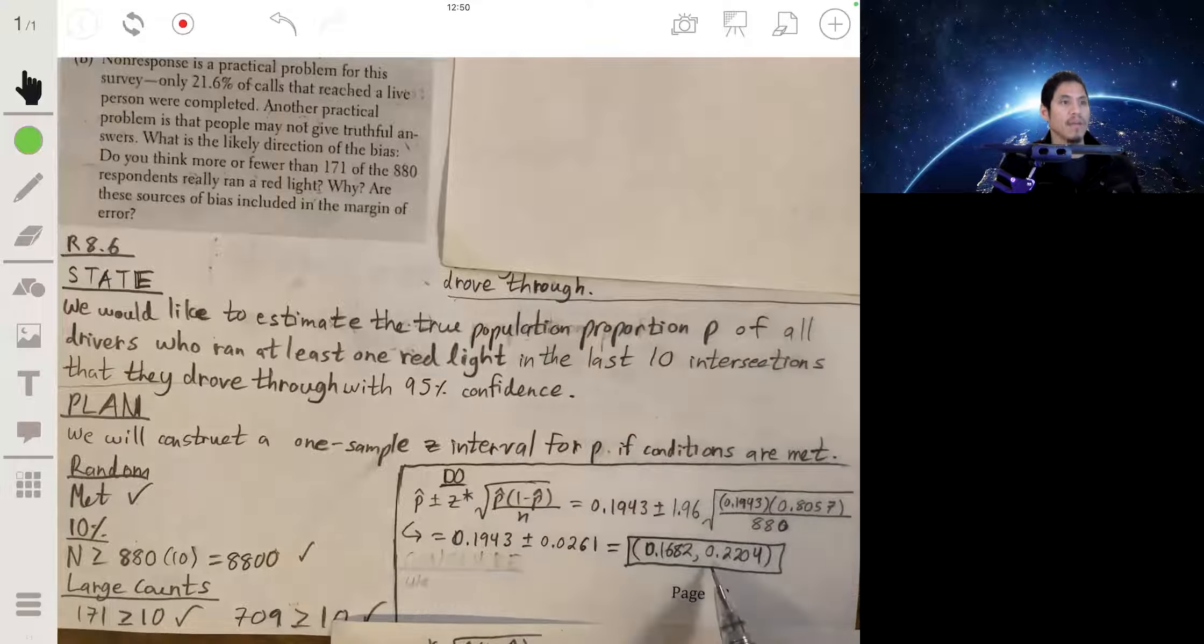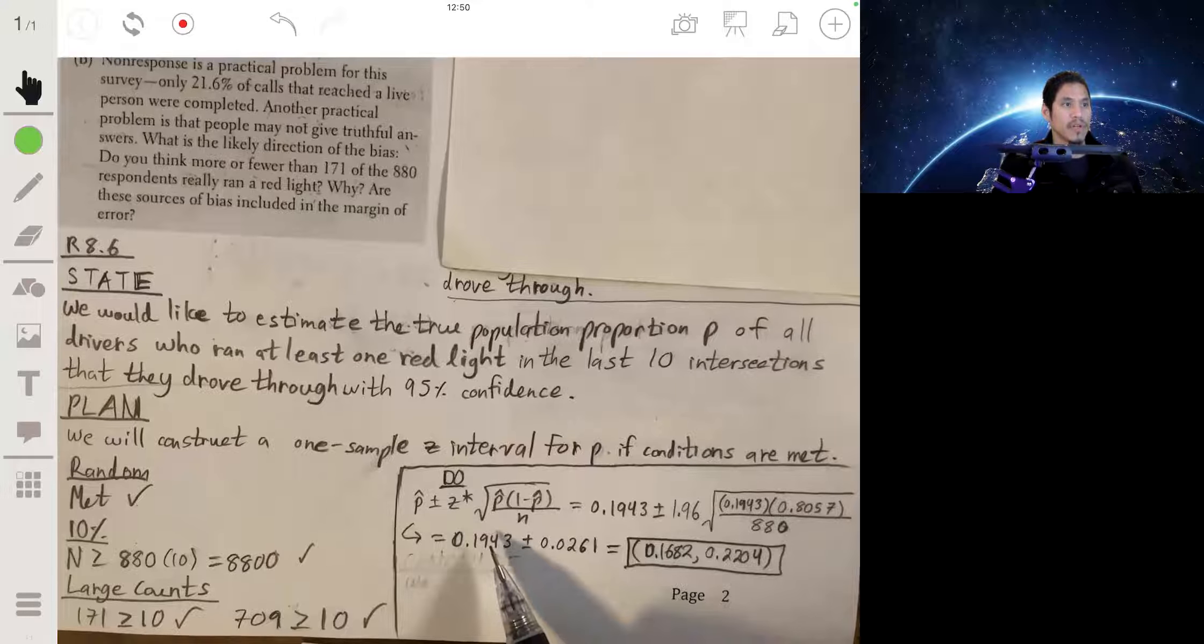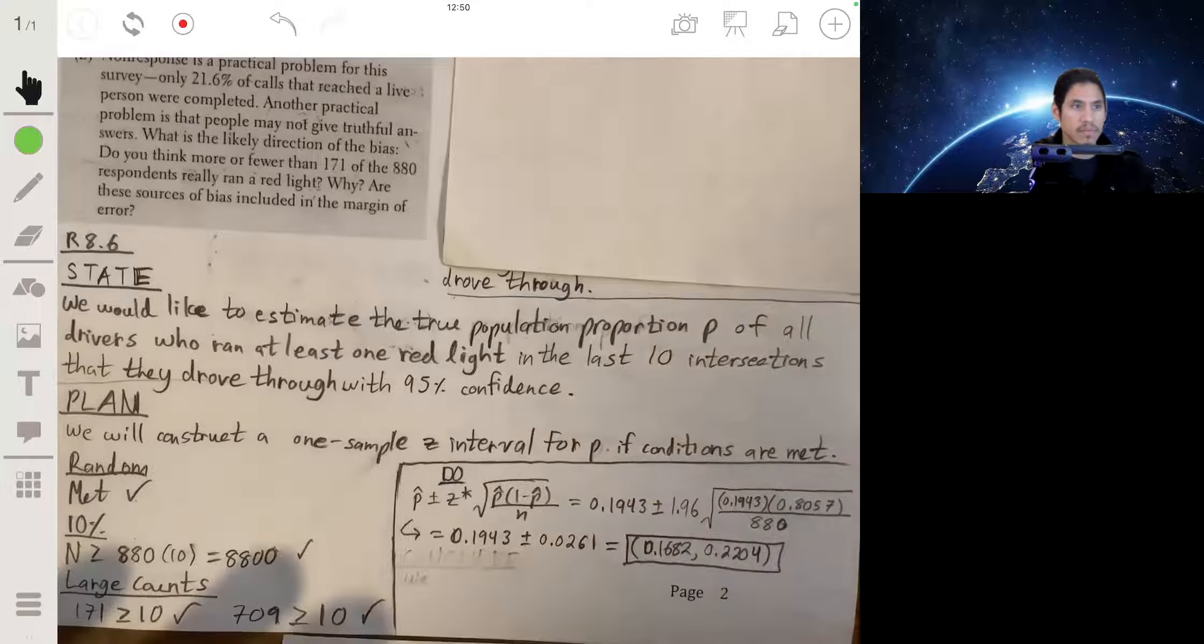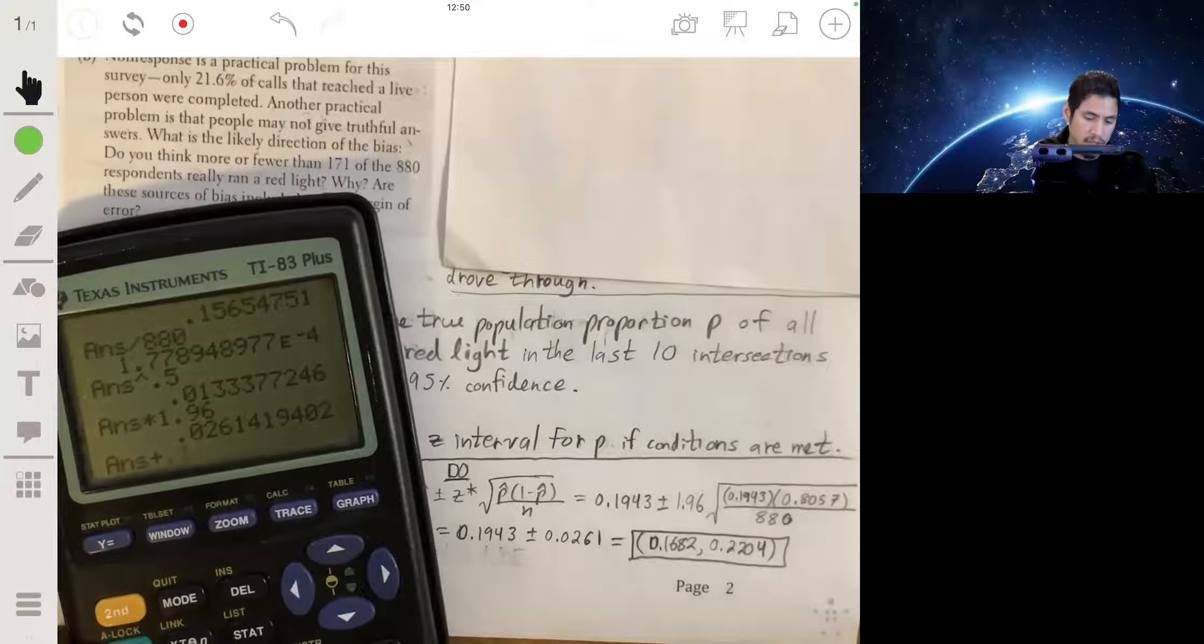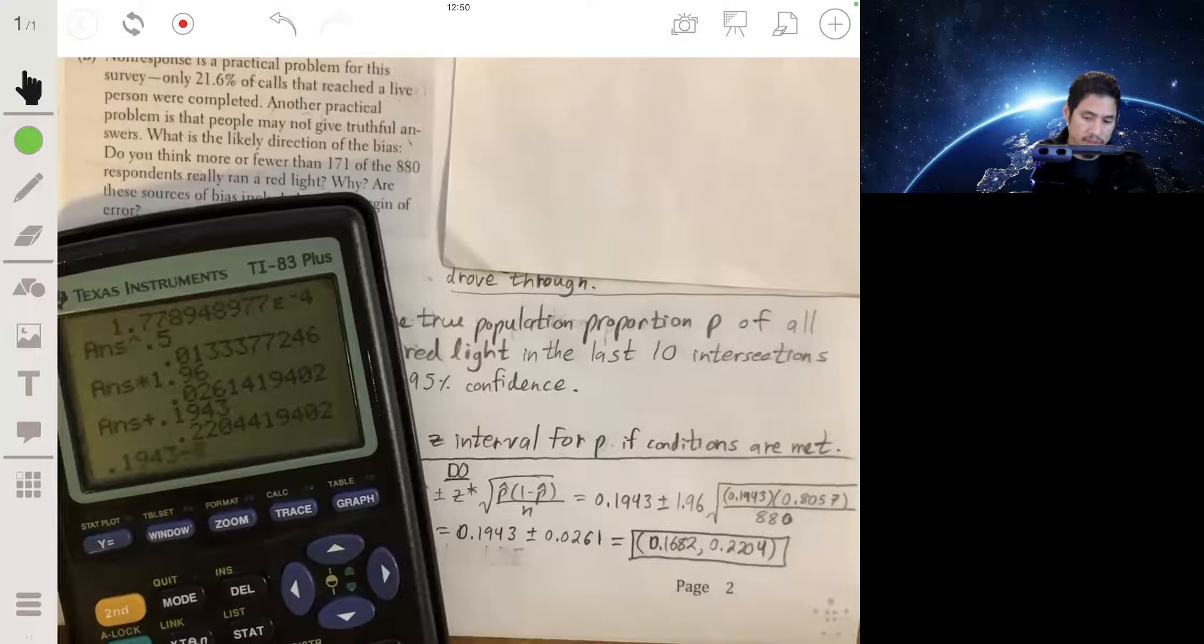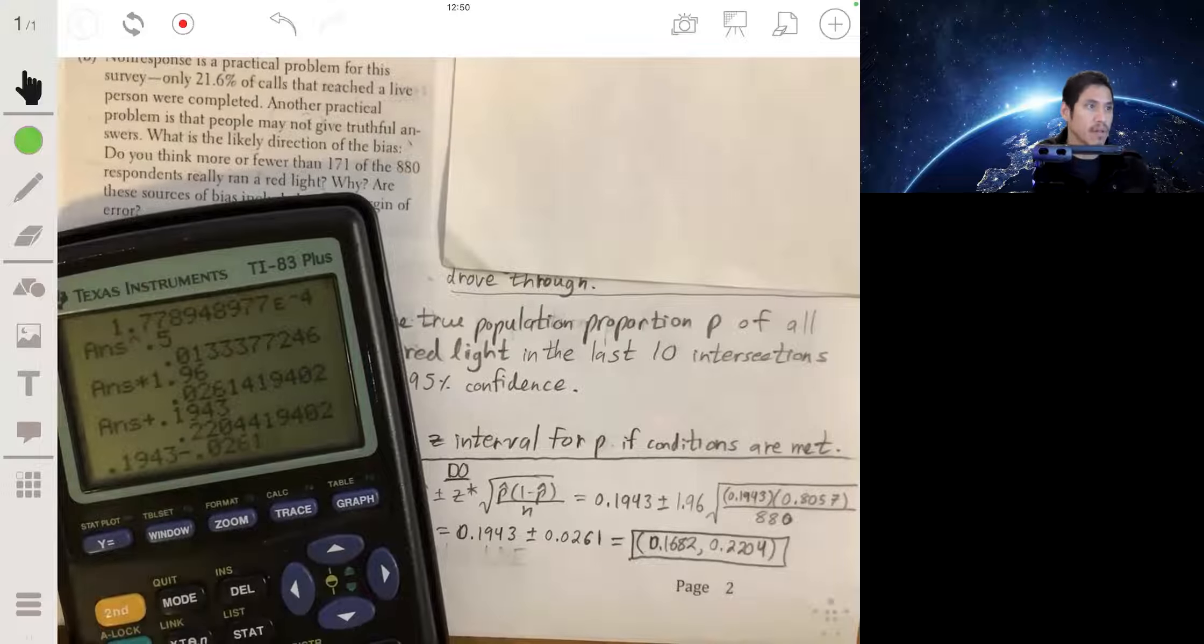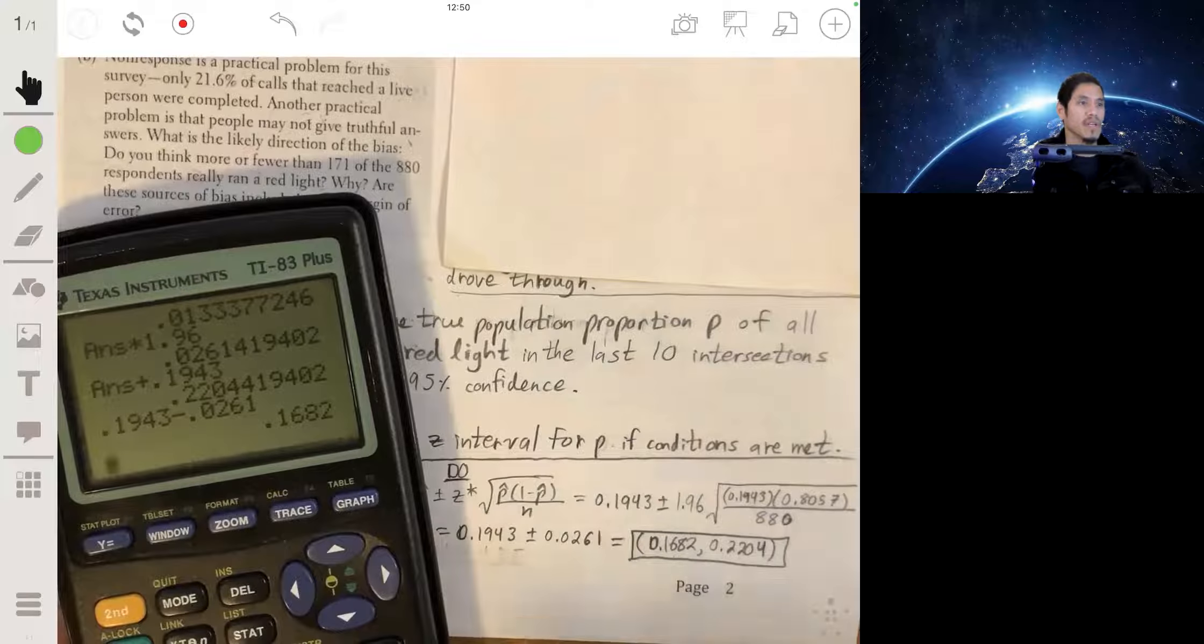So I will then end up adding 0.0261 to the 0.1943, and subtracting 0.0261 from 0.1943. Those will give me my lower and upper bounds of my confidence interval.